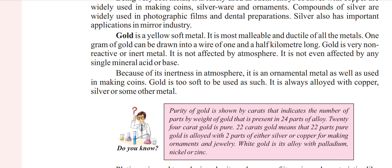The purity of gold is shown by carats, which indicates the number of parts by weight of gold present in 24 parts of the alloy. 24 carat gold is pure gold. 22 carat gold means that 22 parts of pure gold are alloyed with two parts of either silver or copper for making ornaments and jewelry.